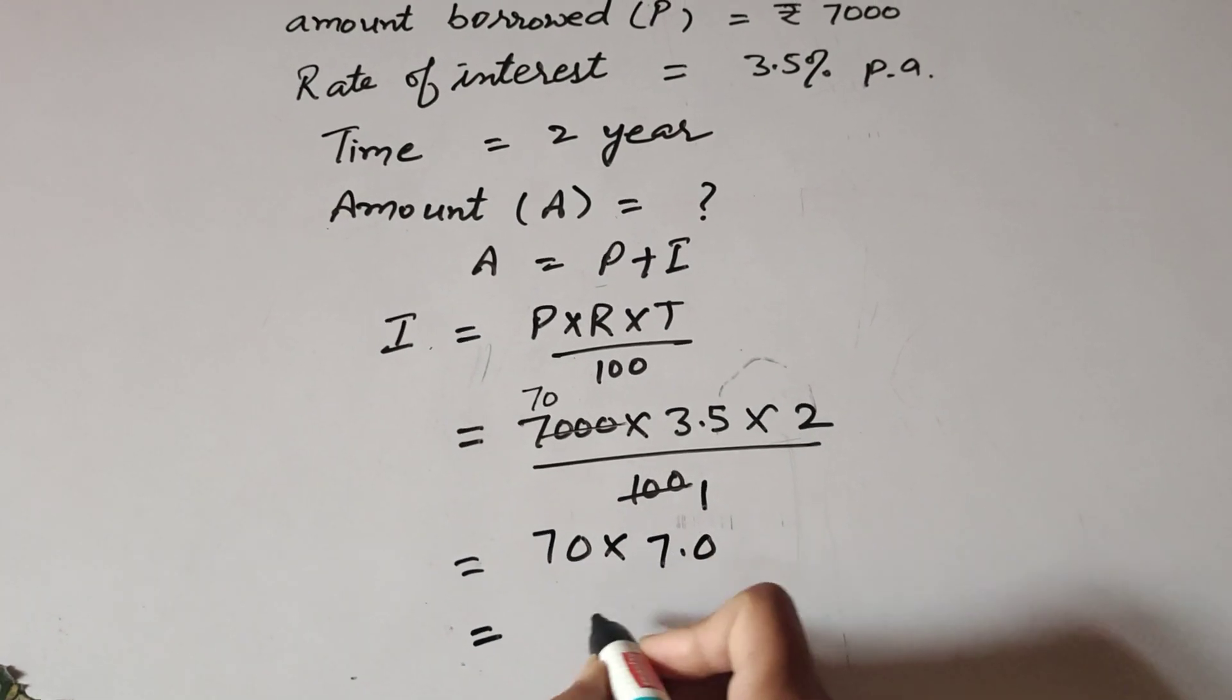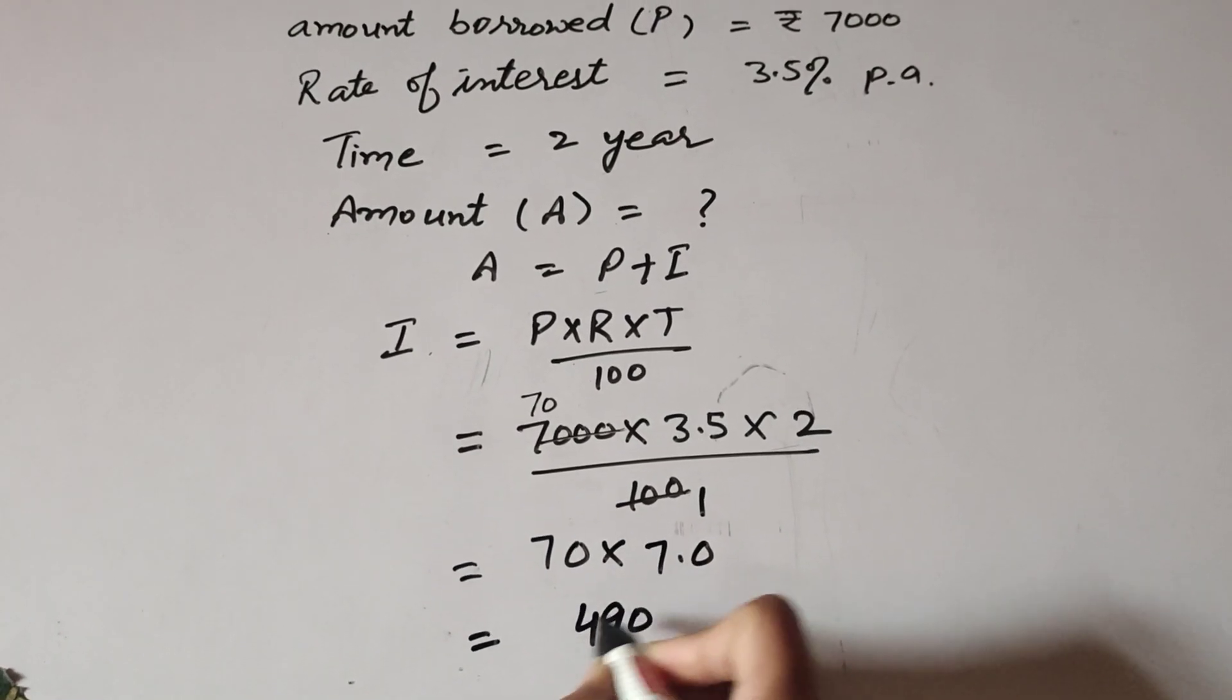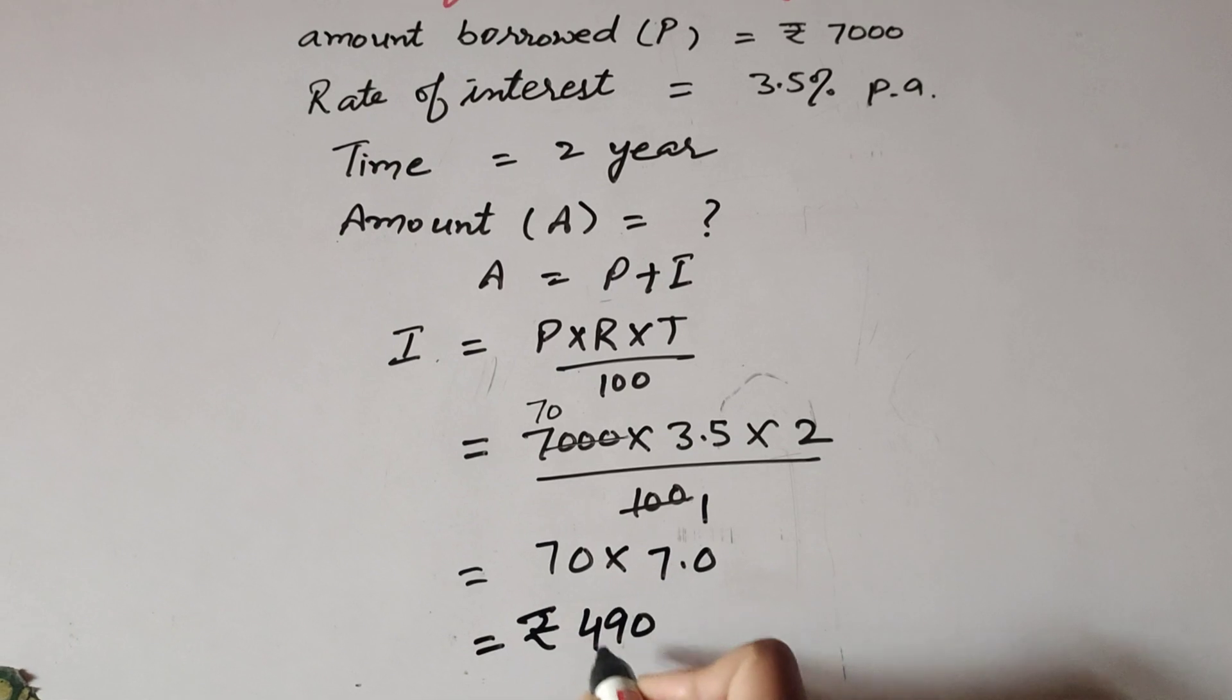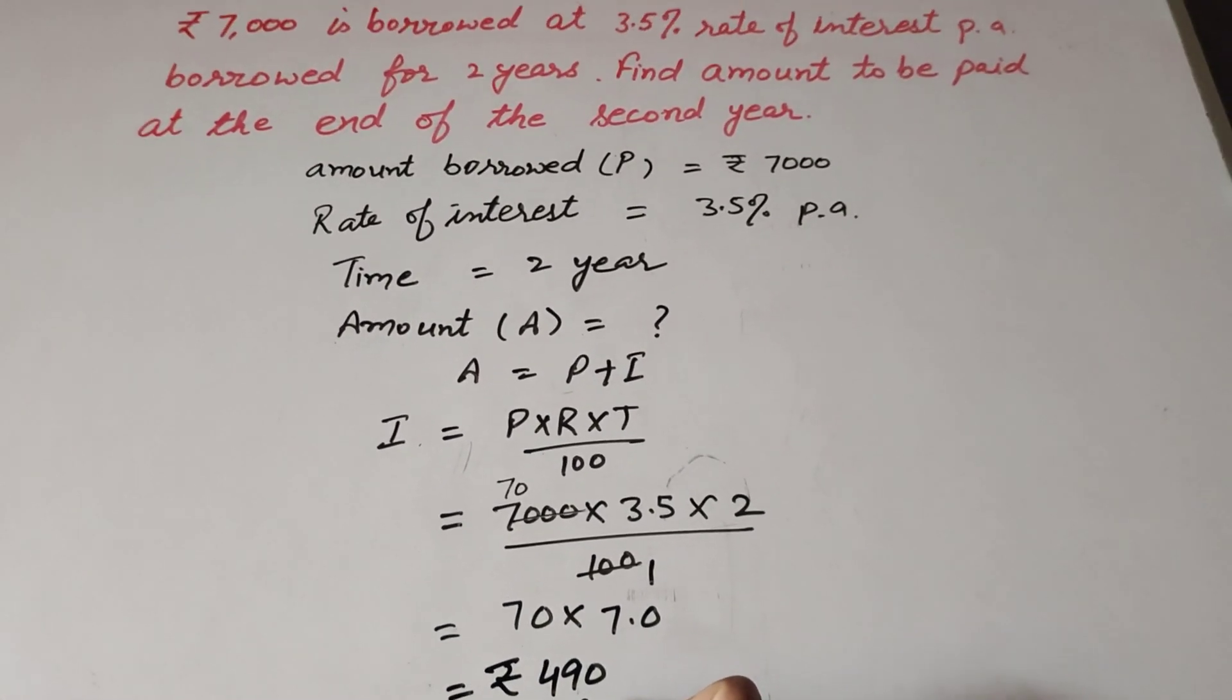Now 70 × 7 = 490. So ₹490 is the interest to be paid after two years.